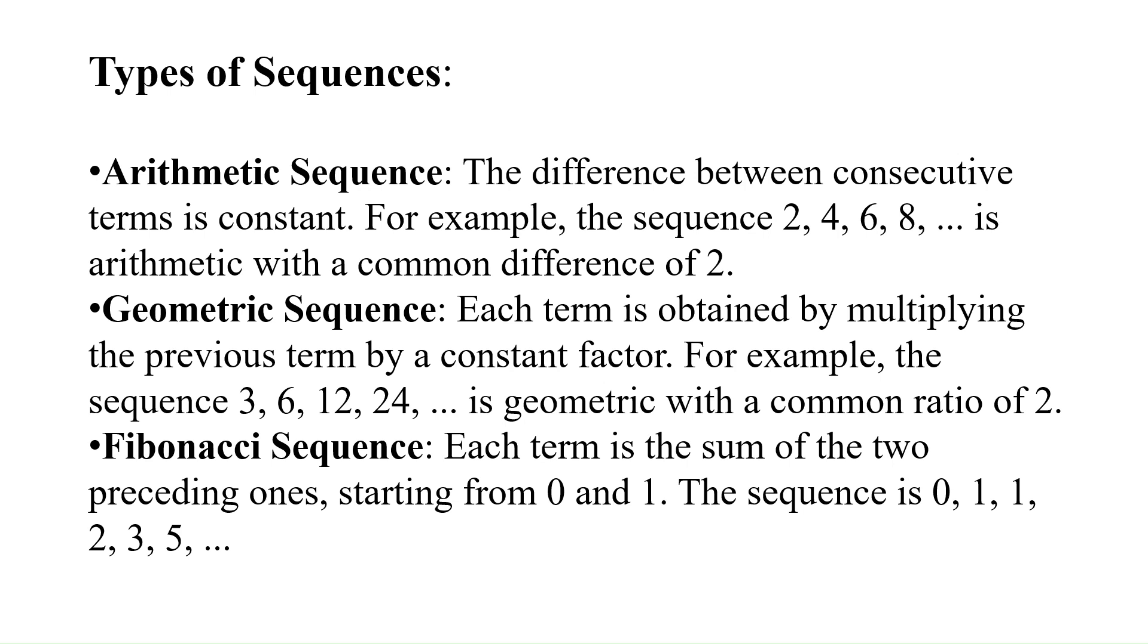Geometric sequence: where each term is obtained by multiplying the previous term by a constant factor. For example, the sequence 3, 6, 12, 24 is geometric with a common ratio of 2.